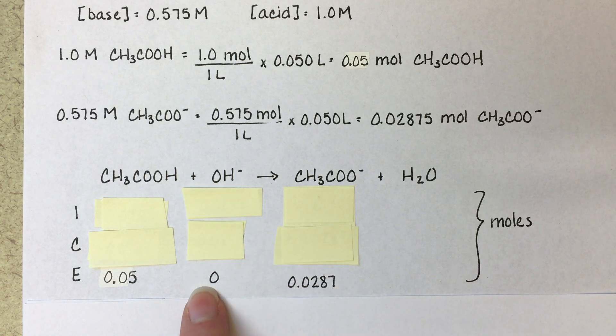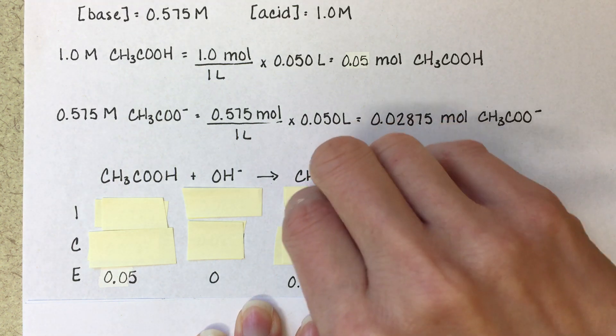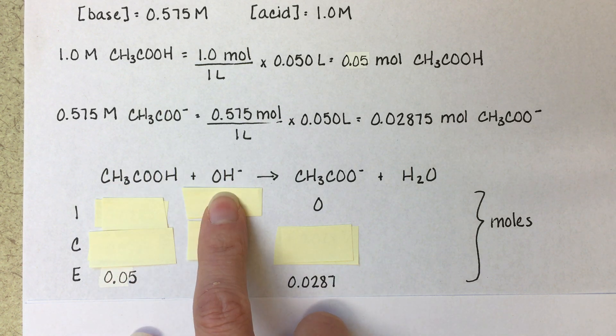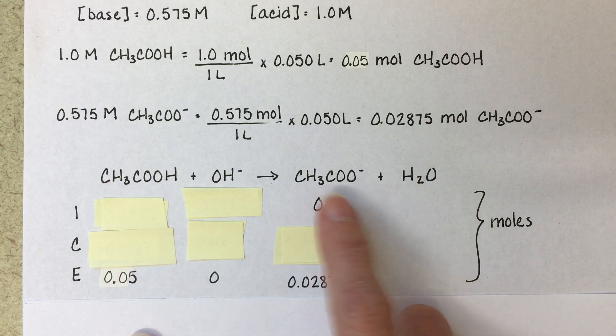And we also know that we don't want any sodium hydroxide to be left over. This is what we need in our buffer. And so we know that we're needing to end here. We also know that we are not starting with any acetate at all. And we're only starting with acetic acid and sodium hydroxide. So this is where we're going to start.